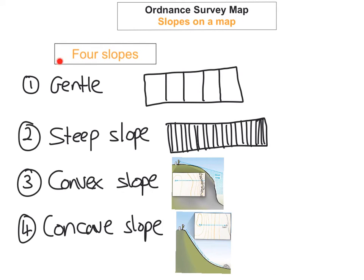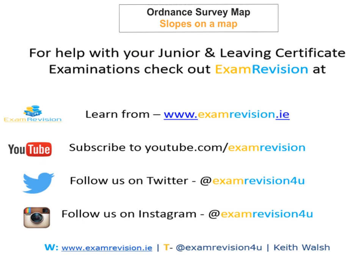So there you have it — the four types of slopes found on ordnance survey maps. A gentle slope has contour lines far apart, a steep slope has them really close, a convex slope has lines that start spread out then become close, and a concave slope has lines that start very close due to a steep drop and then spread out.